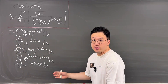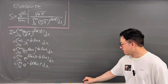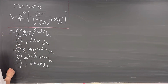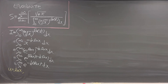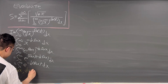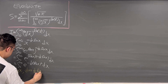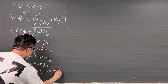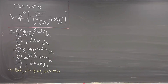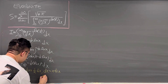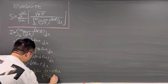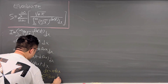So we can use u-substitution. Let u equal ln(x). Then du equals (1/x) dx, which means dx equals x du, and since x equals e to the power of u, we have dx equals e to the power of u, du.